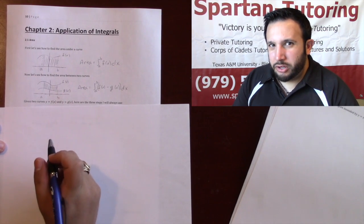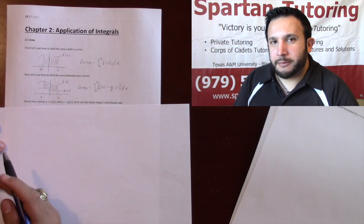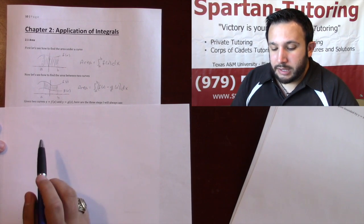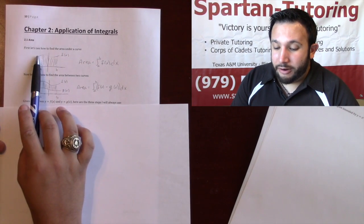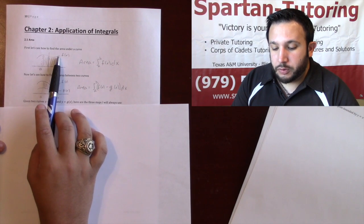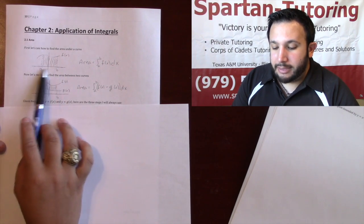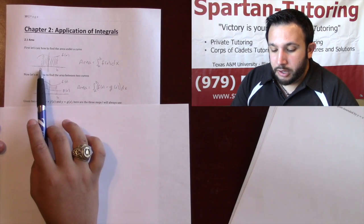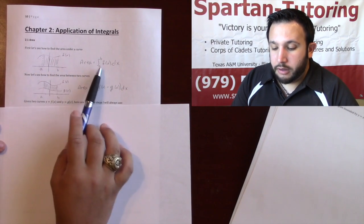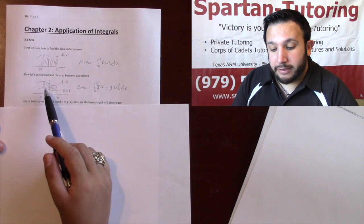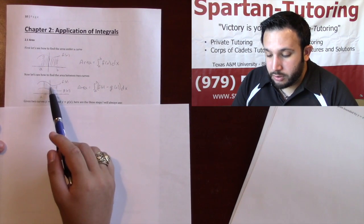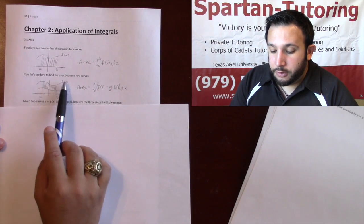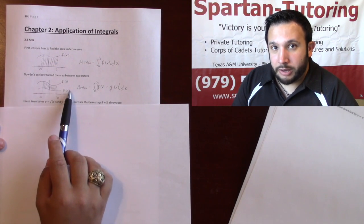Howdy. In this video we're going to talk about how to find the area between two curves. In order to find the area under a curve between your function and the x-axis, that area is going to be the definite integral from a to b of f(x) dx. So if I want to find the area between two curves, you're going to take the integral from a to b of your top minus your bottom function.